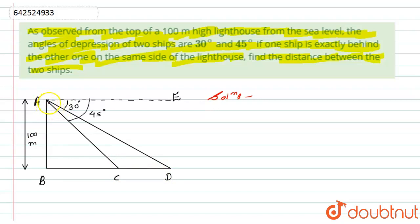When we are seeing from the top of the lighthouse, the angle of depression forming for the first ship is 30 degrees, while the angle of depression forming for the second ship is 45 degrees. Now if this is 30 degrees, then angle D will also be 30 degrees. If this is 45, then angle C will also be 45 degrees.